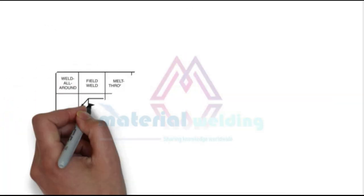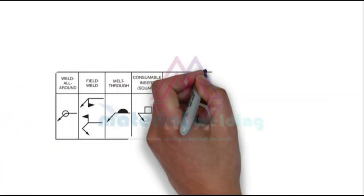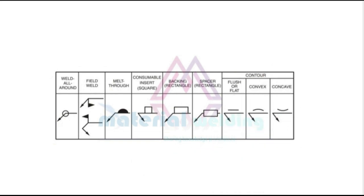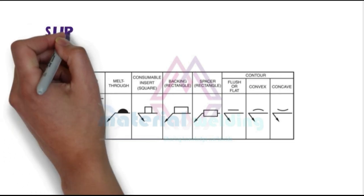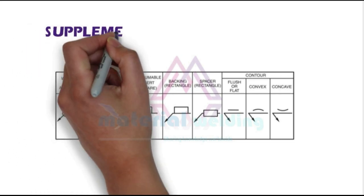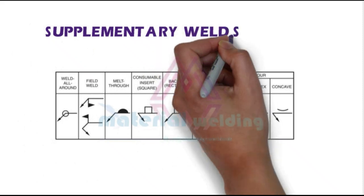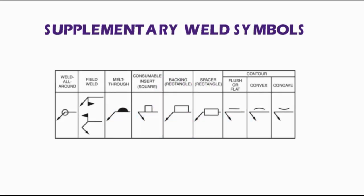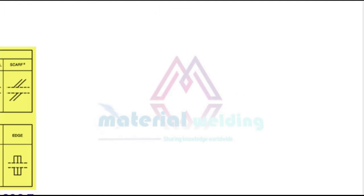Here the full supplementary weld symbols are shown. These symbols are called supplementary as they are placed on the primary symbols or supplement the primary weld symbols — for example, all-around weld, field weld, backing, and weld profile symbols. These symbols are to be used in connection with primary welding symbols to provide additional weld joint requirements.